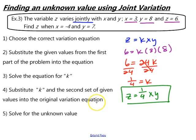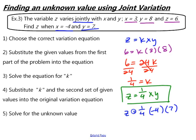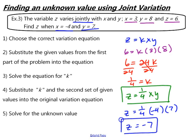Now we substitute the second set of values — x equals negative 4, y equals 7 — into our equation to solve for the unknown. So z equals one-fourth times negative 4 times 7. One-fourth times negative 4 is negative 1, and then times 7 gives z equals negative 7. Here we have our equation that relates our variables with the constant of variation, and we have our unknown value that we needed to solve for.